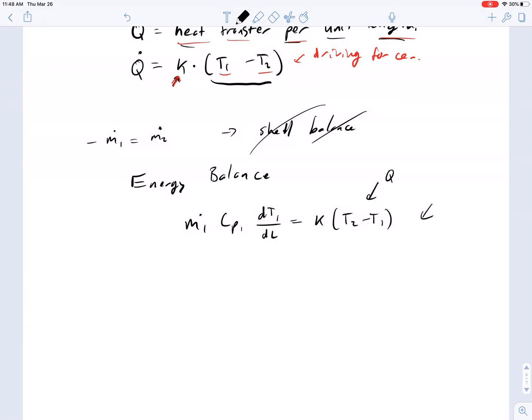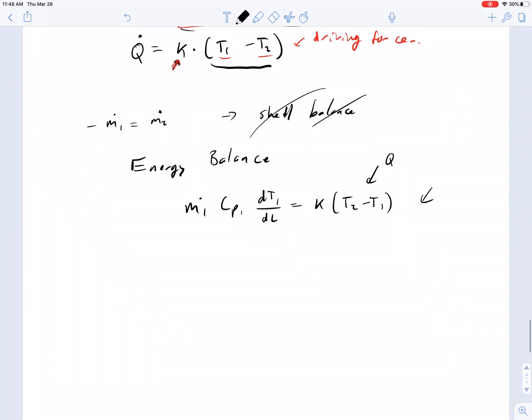Now we're going to have the opposite here. M2 CP2 DT2/DL is going to be equal to minus K times T2 minus T1.